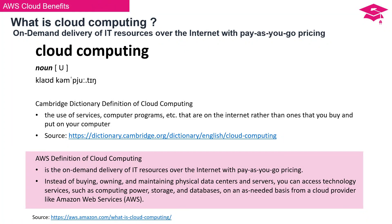Let's begin with the definition of cloud computing. The AWS cloud computing definition entails the on-demand delivery of IT resources over the Internet, featuring pay-as-you-go pricing. Rather than buying, owning, and maintaining physical data centers and servers, you have the option to utilize IT resources and technology services — such as computing power, storage, and databases — on a per-need basis from a cloud provider like Amazon Web Services.